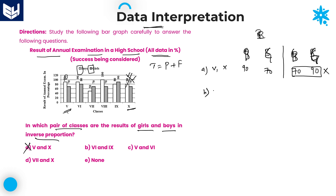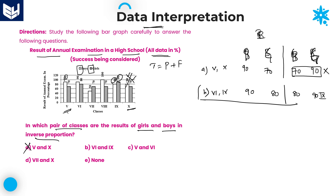Go for option B: class 6 and class 9. In class 6, boys are 90 and girls are 80. For the condition, in class 9, boys must be 80 and girls must be 90. Once you check: in class 9, boys are 80 and girls are 90 — yes, that is true. Therefore, option B is the right answer. Let us check the remaining options as well.